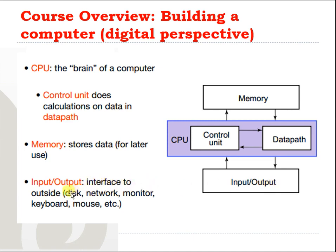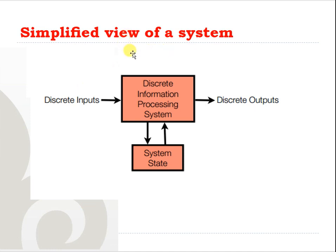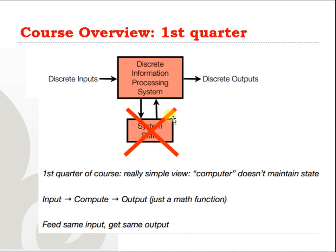Some examples of input and output devices include disk, network, monitor, keyboard, and mouse. If we want a simplified view of the system, we can see it as a discrete information processing system which receives discrete inputs, generates discrete outputs, and may have a system state. We focus on discrete information — discrete inputs, discrete outputs — and the whole system is discrete. Later we will see the difference between discrete and continuous forms of information.